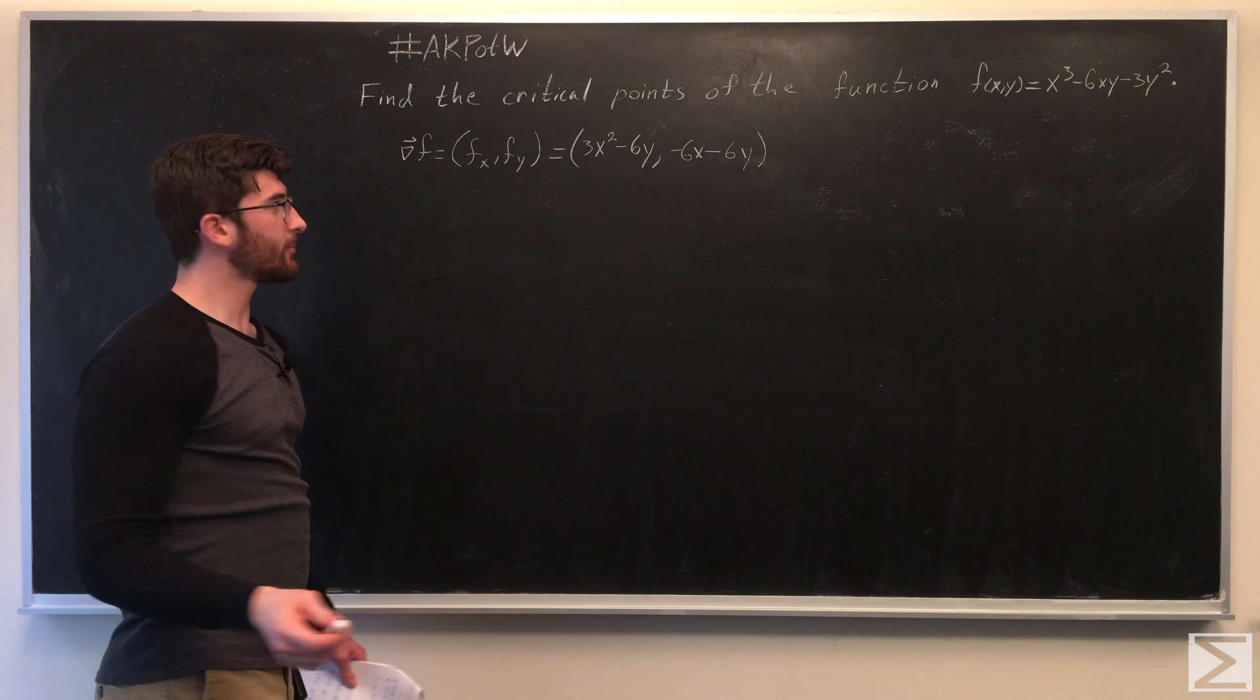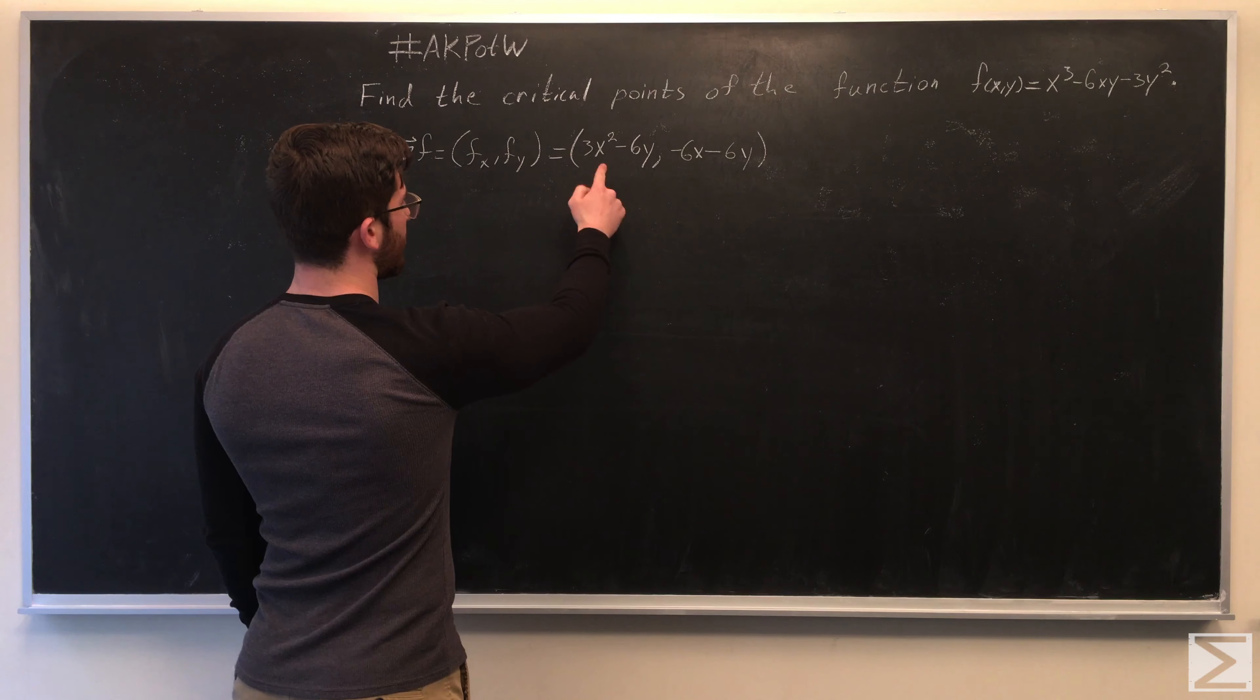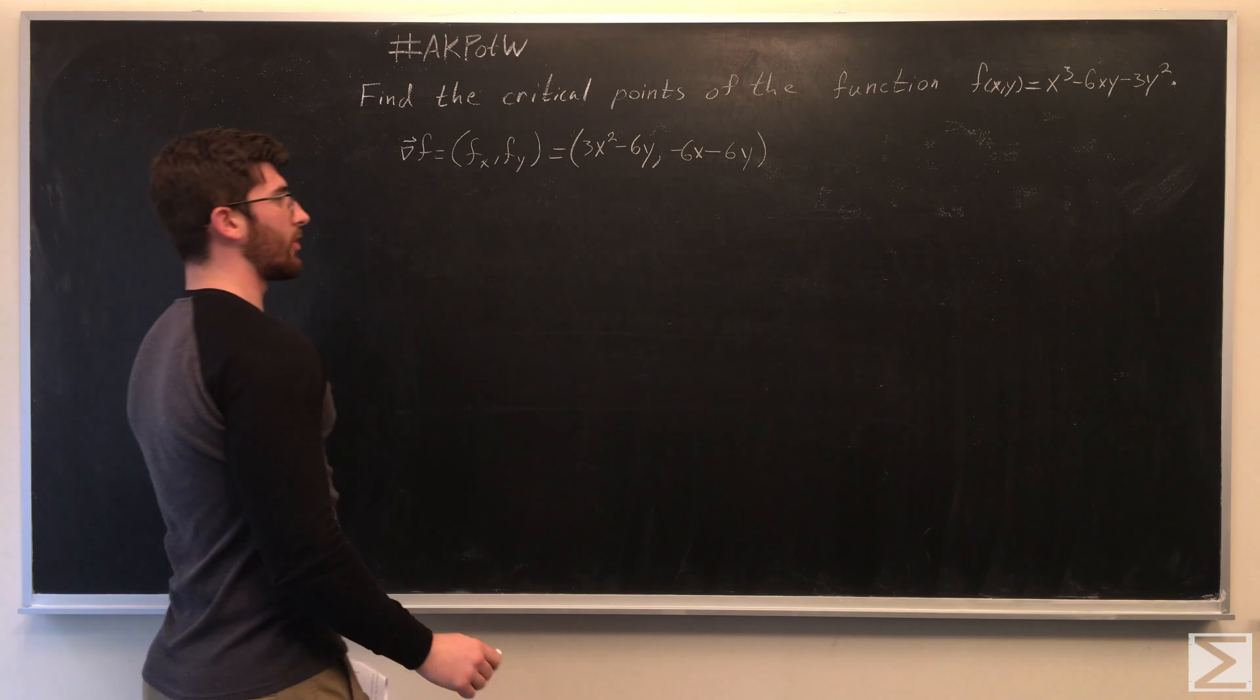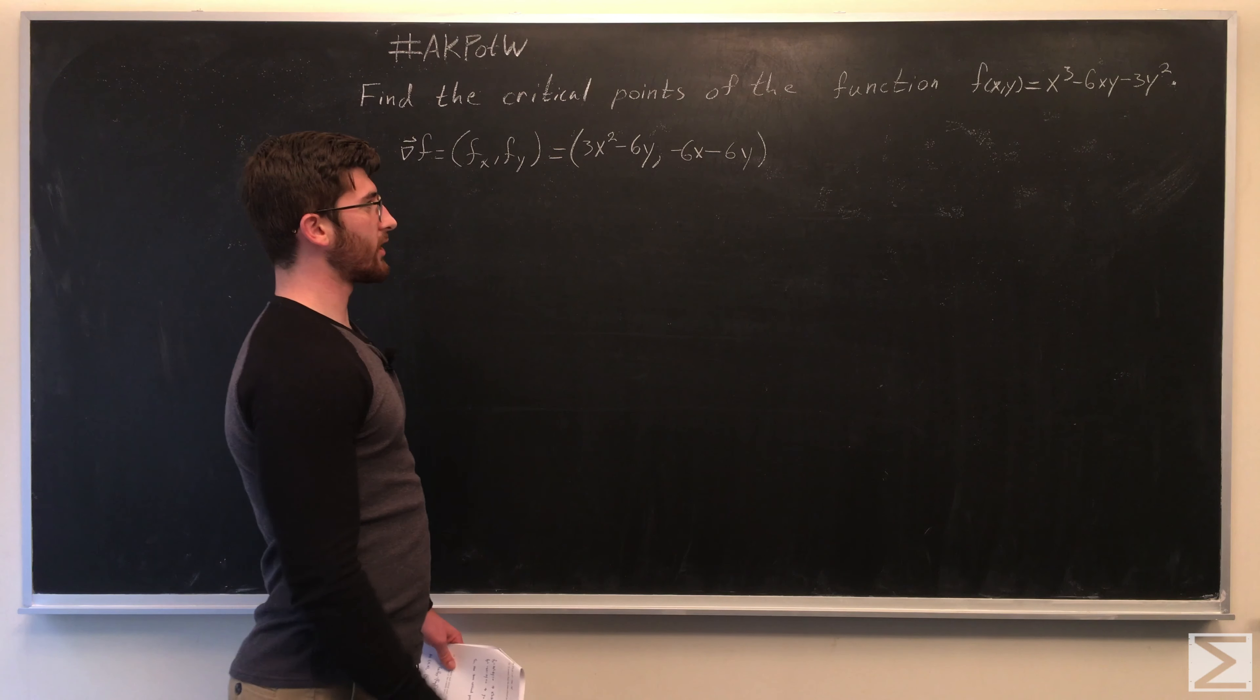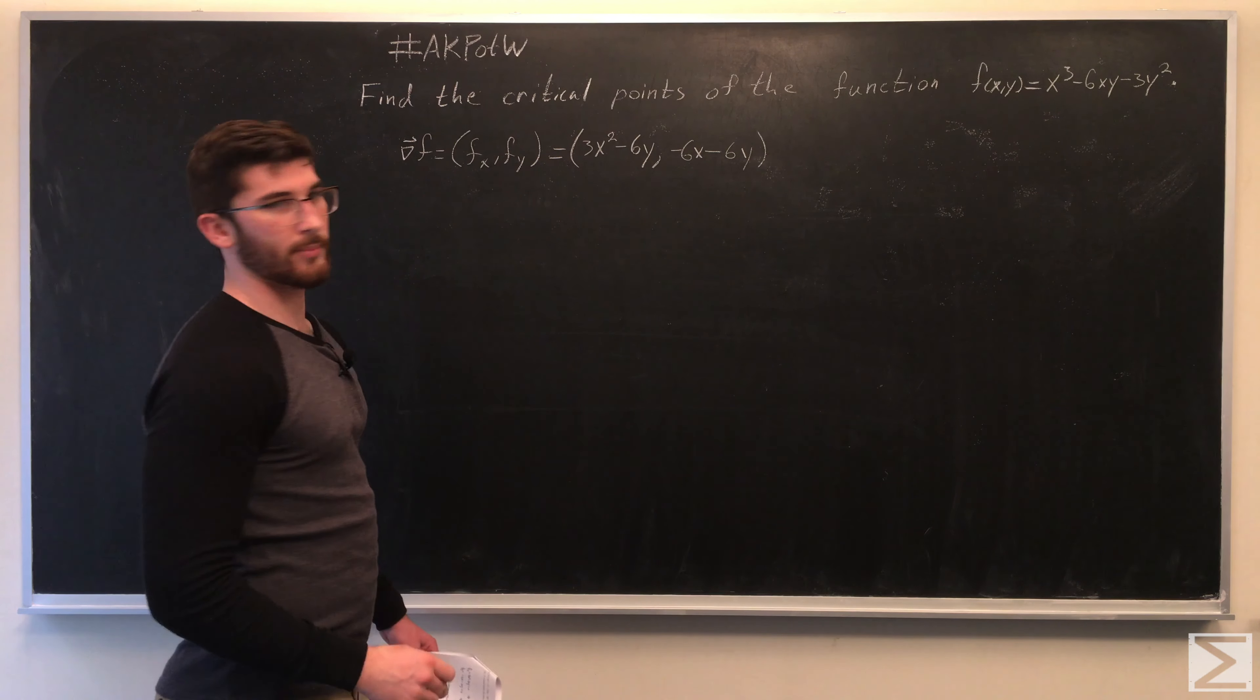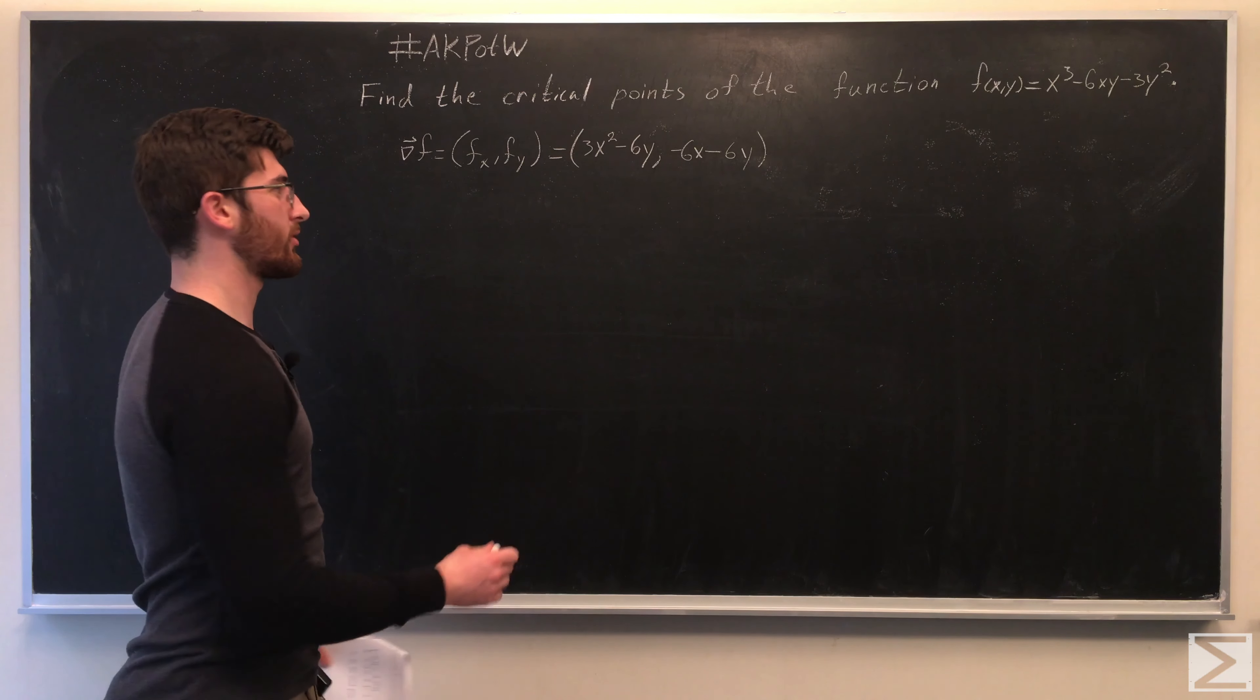So f_x equals 3x² - 6y, and f_y equals -6x - 6y. Let's set those both equal to 0.